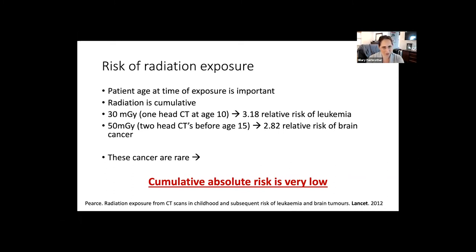These cancers are rare, so the data is difficult to interpret. The cumulative absolute risk is very low: in 10 years after one CT scan in a child under 10, this translates to one extra case of leukemia and one extra case of brain cancer per 10,000 head CTs ordered. This makes it hard for parents and clinicians alike, because the risk cannot be applied to an individual patient — it applies to a population as a public health measure. Yes, the risk is real, but it is hard to apply on an individual basis.